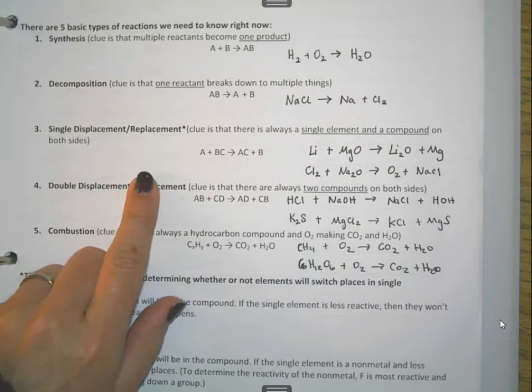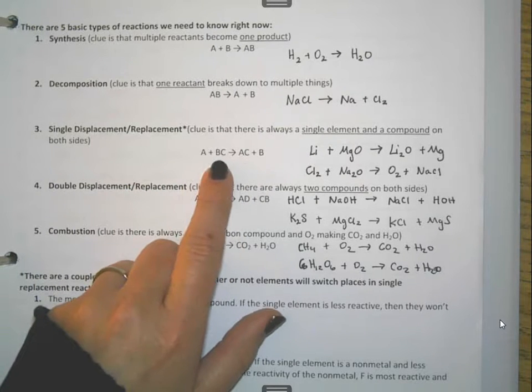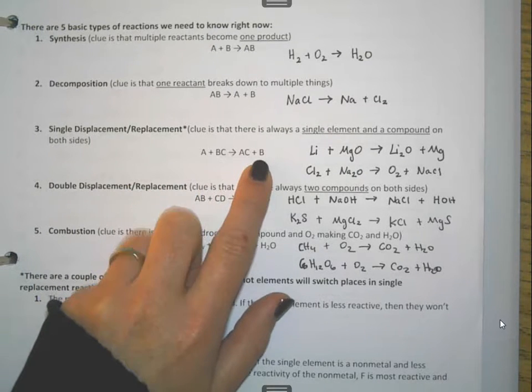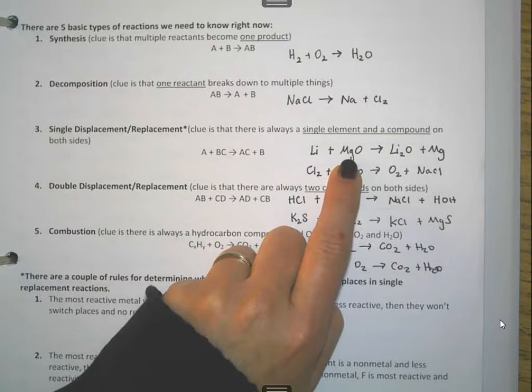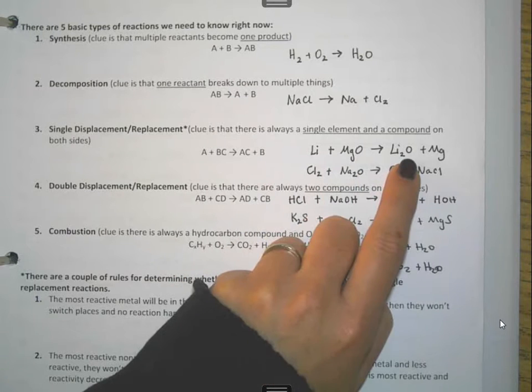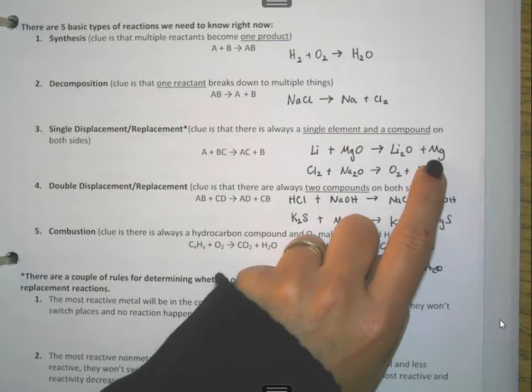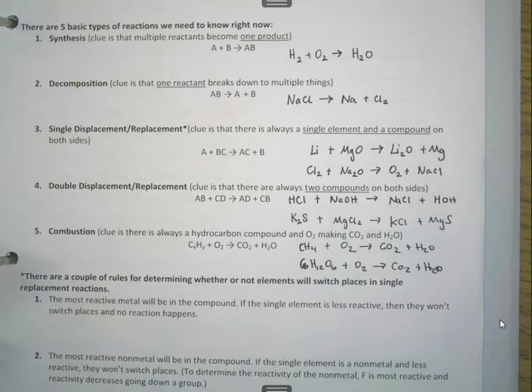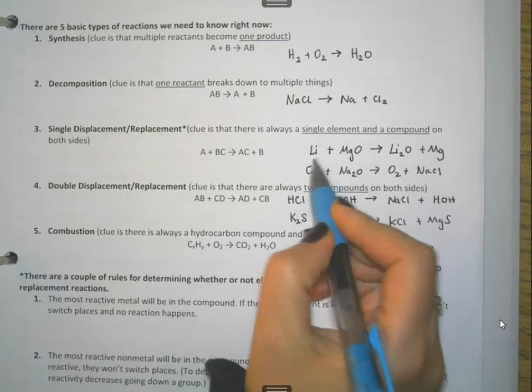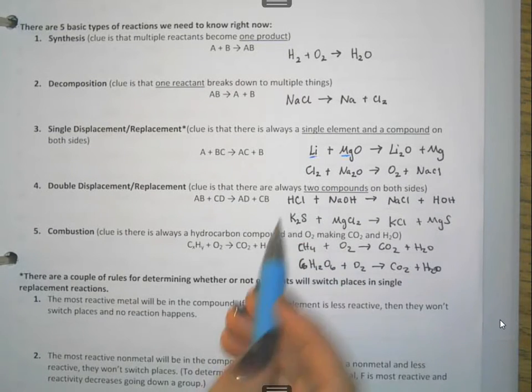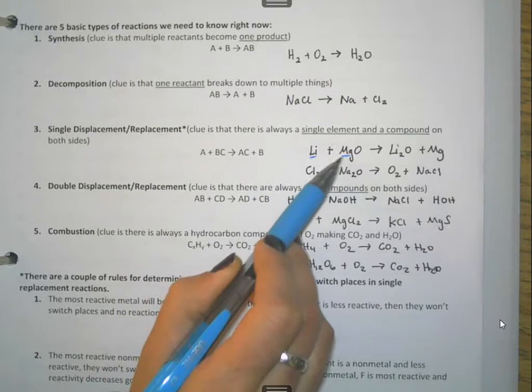Single replacement or single displacement. You always have a single element and a compound on both sides. For example, in this one I have a single element of lithium, the compound of magnesium oxide. On the product side, I have a new compound and a different element. Because what happened with single displacement is that my two metals in this particular case switched places. If you have a single element that is a metal, it has to switch place with this metal right here.